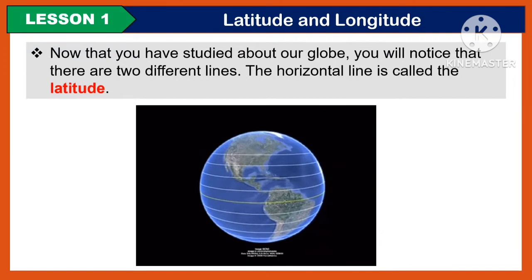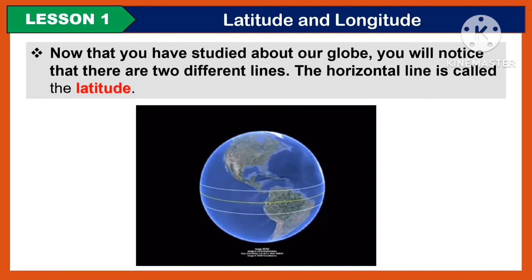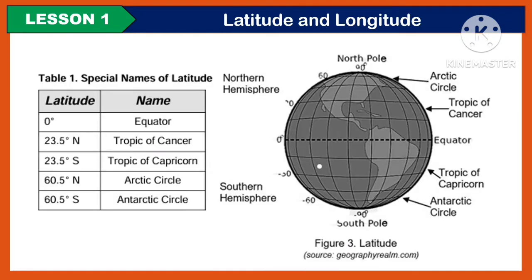Now that you have studied about our globe, you will notice that there are two different lines. The horizontal line is called the latitude. The following are the five special names of the latitude: we have the equator, Tropic of Cancer, Tropic of Capricorn, Arctic Circle, and Antarctic Circle.